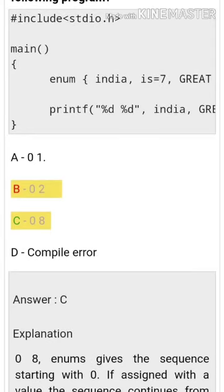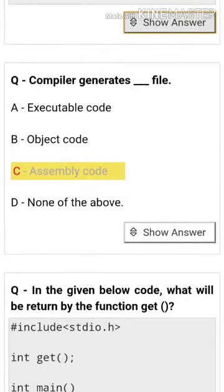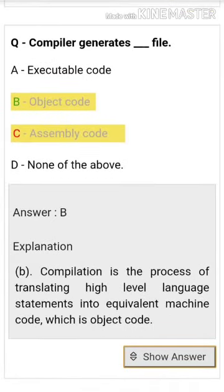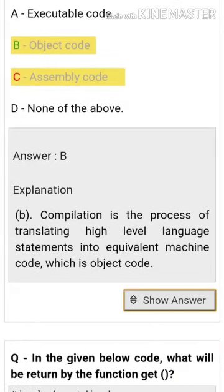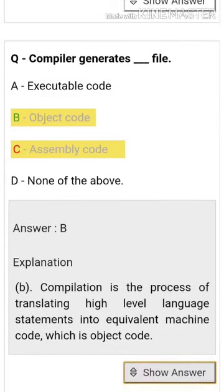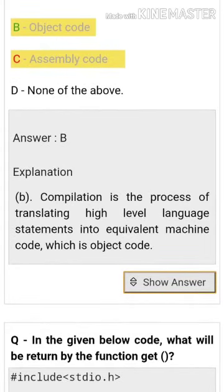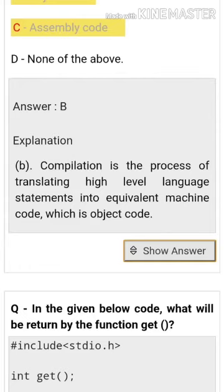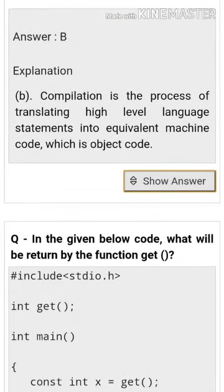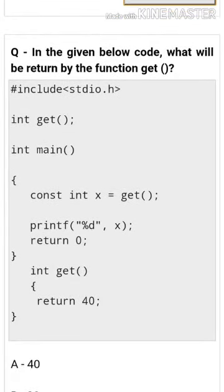Compiler generates object code. Compilation is the process of translating high-level language statements into equivalent machine code, which is object code.